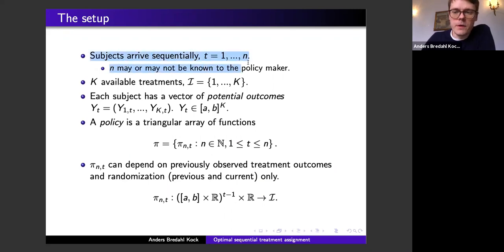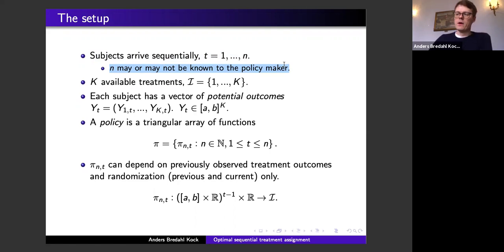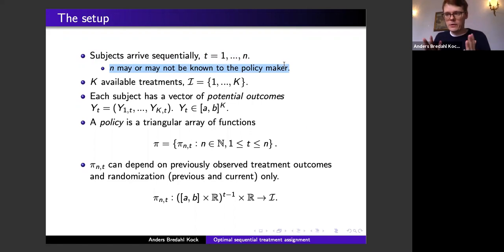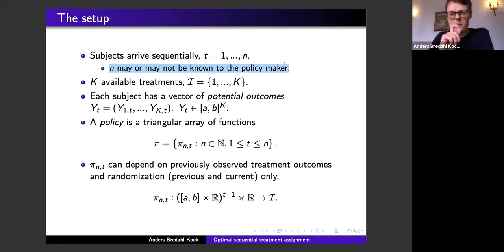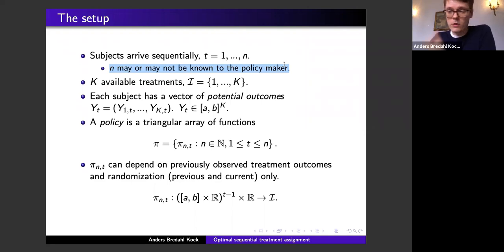Subjects to be treated arrive sequentially, and in total the policy maker will make N assignments. The total number of assignments N may or may not be known to the policy maker. Knowing N could be useful: if you must make only 100 assignments you'll experiment less than if you must make 1 million, since for 1 million you might set aside 10,000 observations to find which treatment works best.